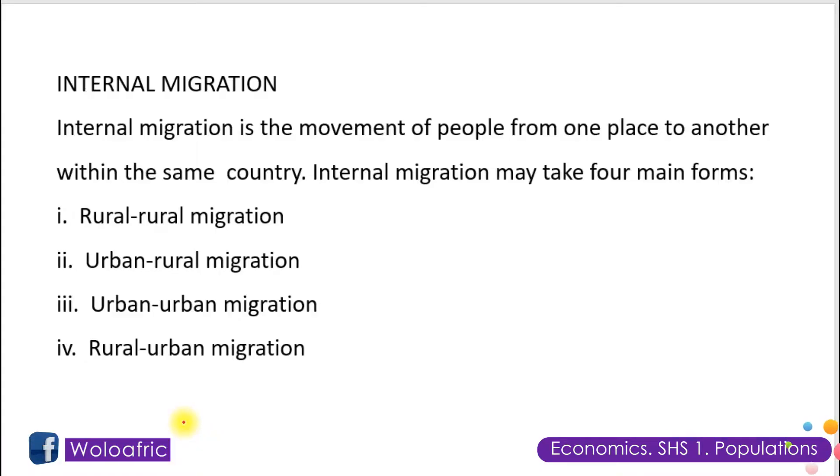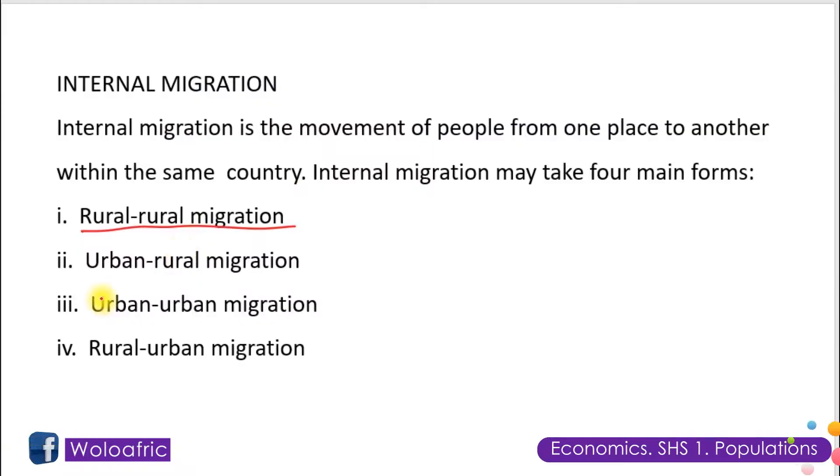We're going to look at various types of internal migration in Ghana. One type is rural-rural migration, which is the movement of people from one rural area to another rural area. You move from one rural community to another rural community, either because you want to get access to fertile land or other things. That is what we refer to as rural-rural migration.